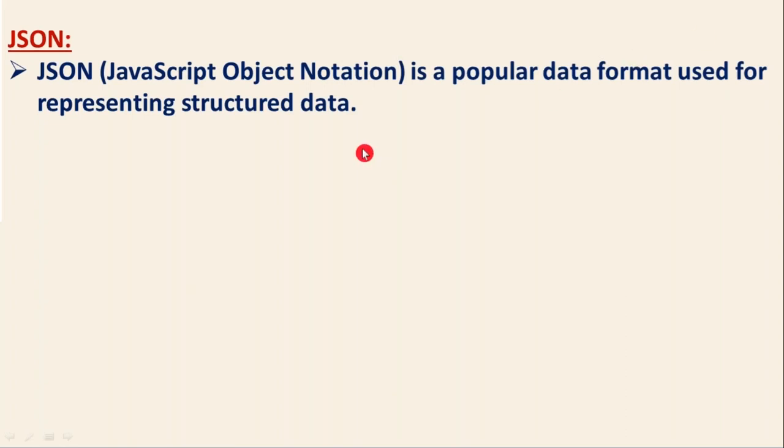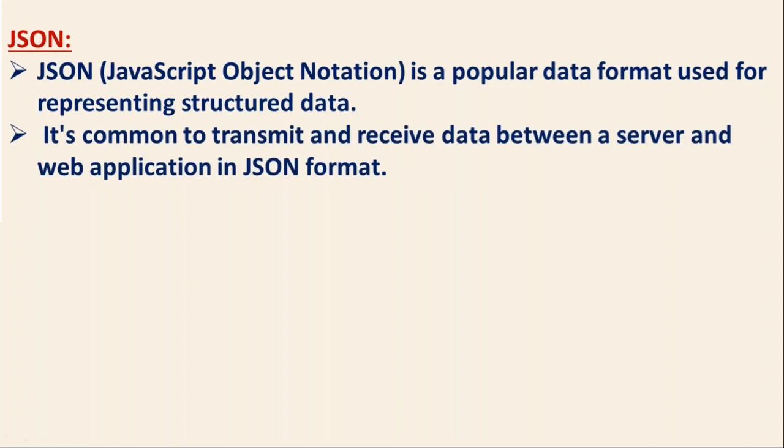Before JSON, you know XML, right? The purpose of XML is just to transfer your data from server to application, or from application to server — simply server to client or client to server. The same way we are using JSON as well.